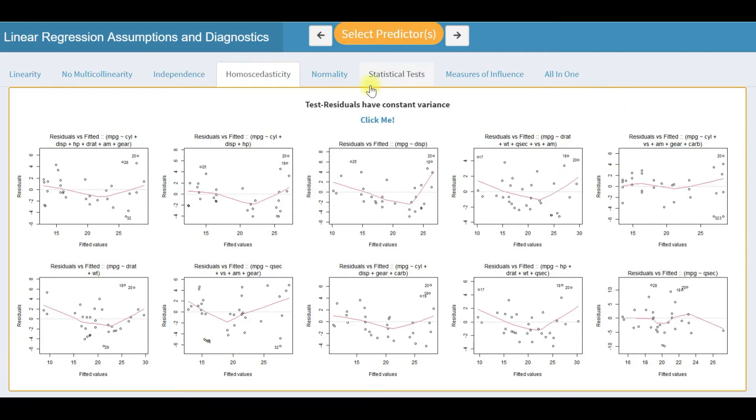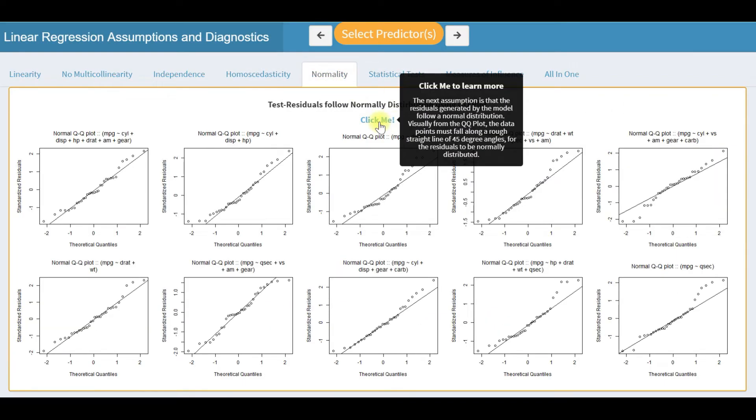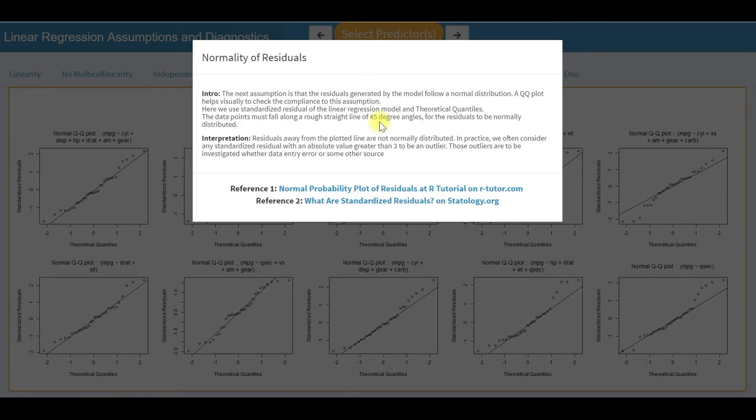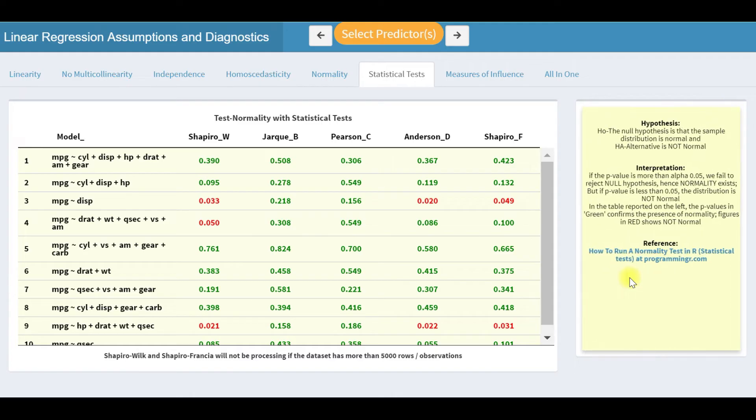Here we use Q-Q plot and statistical tests to confirm whether residuals follow normal distribution. Here we do five types of statistical tests to confirm the normality of residuals. Models having green p-values confirm the normality of the residuals. Here you could see uniformity of results of those five tests.